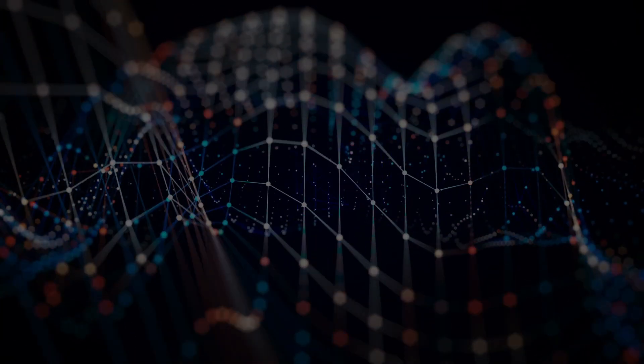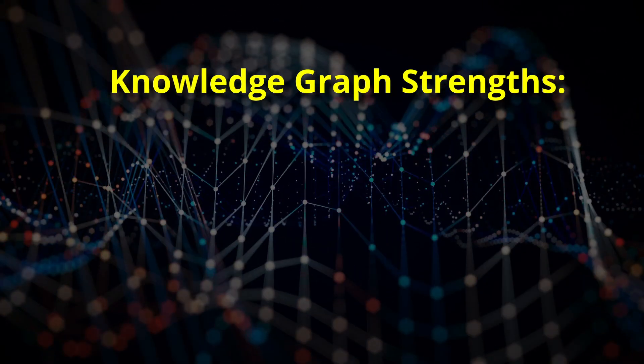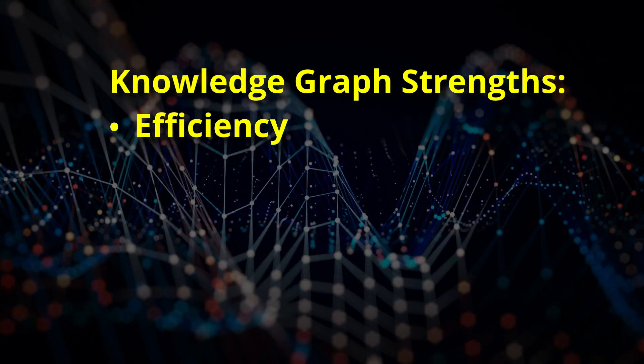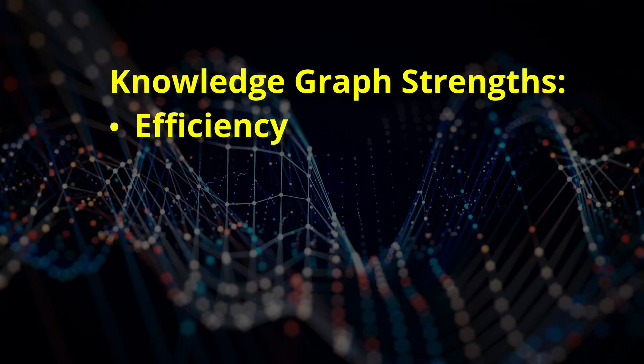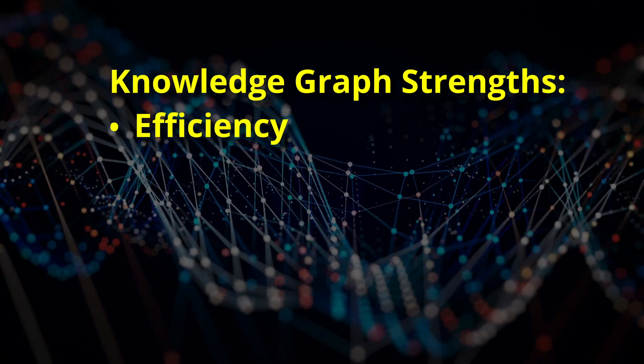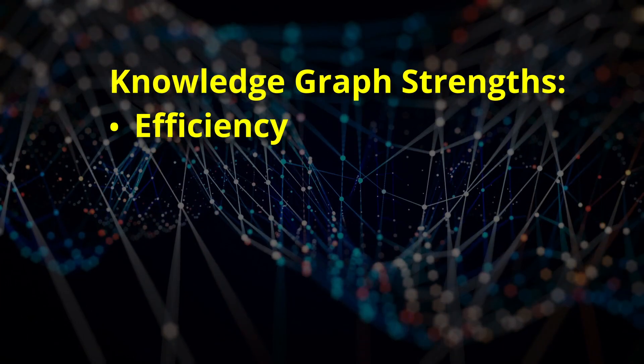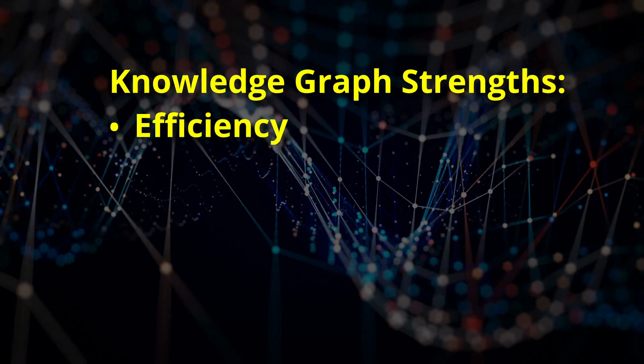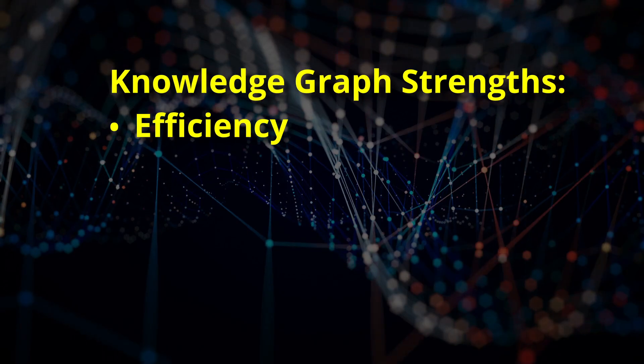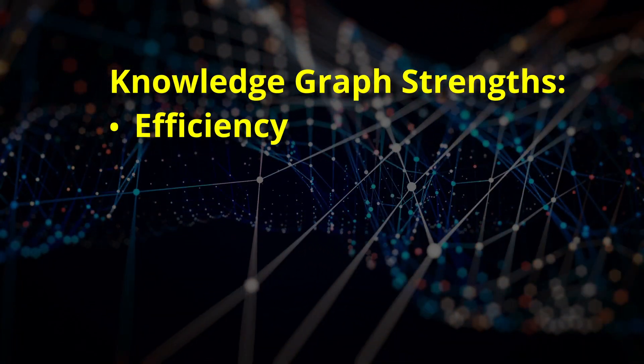So what makes Knowledge Graphs so powerful? Instead of storing massive amounts of statistical information, only meaningful nodes and relationships are kept. For retrieval, only relevant portions of the network are searched, while a neural network processes every data item.